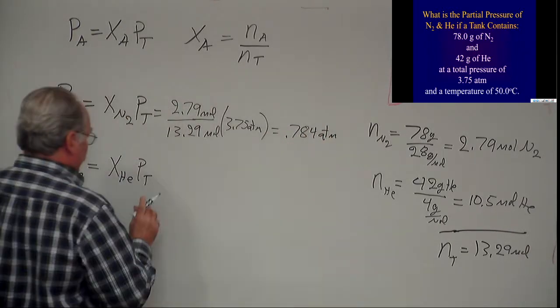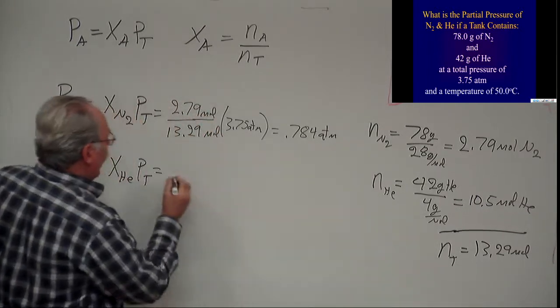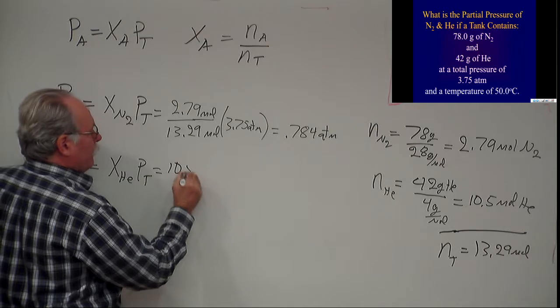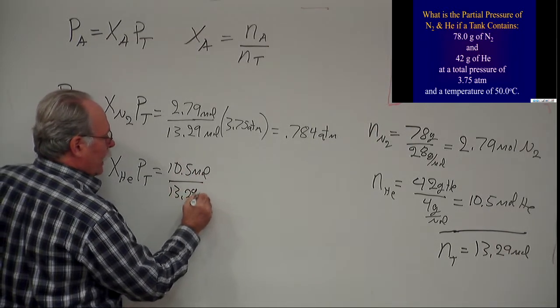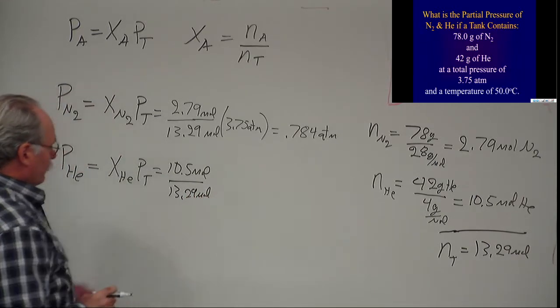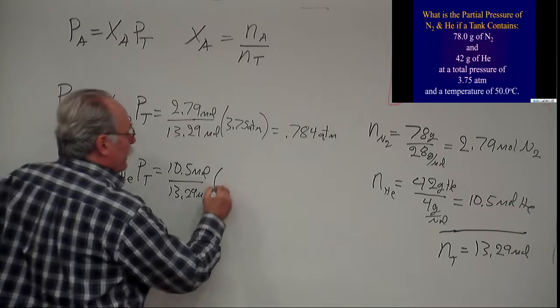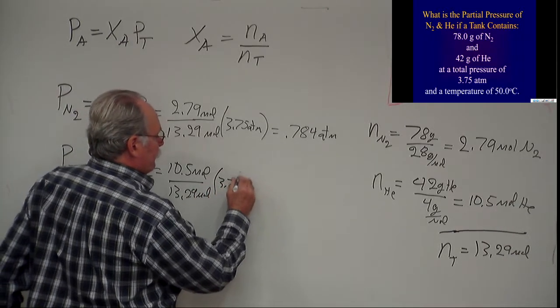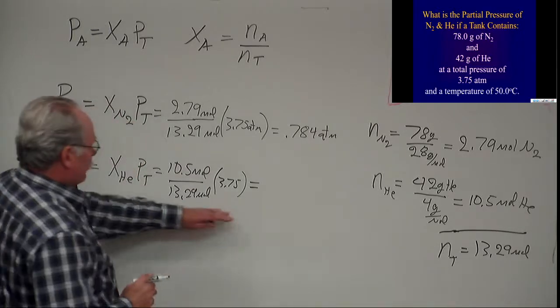Now I know I have 10.5 moles of helium, so 10.5 moles of helium divided by 13.29 moles total is my mole fraction, and then I multiply that by 3.75. Now there's two ways I can get this next answer. I can either do this math here...